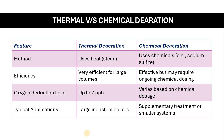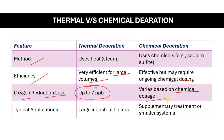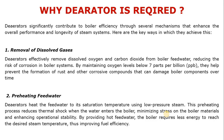Comparing thermal and chemical de-aeration: for large volumes, thermal de-aeration is preferred, while chemical de-aeration effectiveness depends on ongoing chemical dosing. In terms of oxygen reduction level, thermal de-aeration achieves down to 7 parts per billion, while chemical de-aeration depends on the chemical dosage as specified by the manufacturer. Thermal de-aeration is typically used in large industrial boilers, while chemical de-aeration is used as supplementary treatment or for smaller systems.